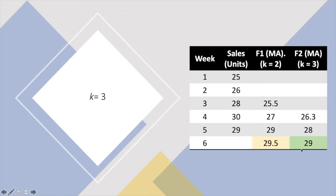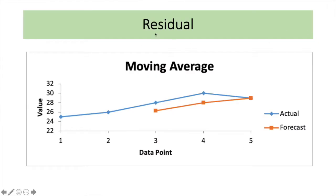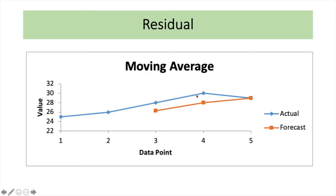In order for us to decide which precise forecast value to pick, we have to look into the residual. When we do a forecast, the blue line here is the actual value and the orange line is the forecast value. If the distance between these two lines is getting smaller, it indicates that the forecast is much better. That's the residual — the difference between the actual and the forecast. We have to pick the K that will have the smallest amount of residual.